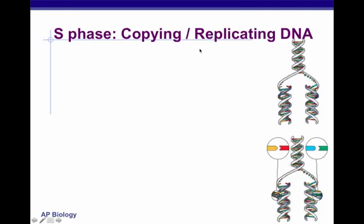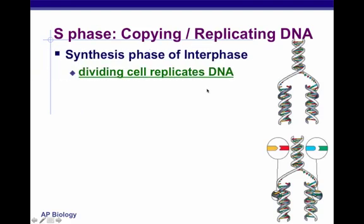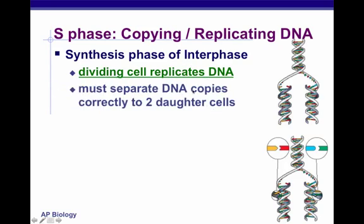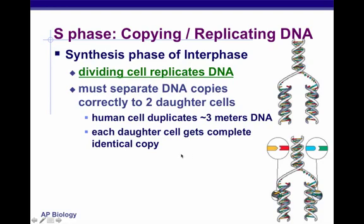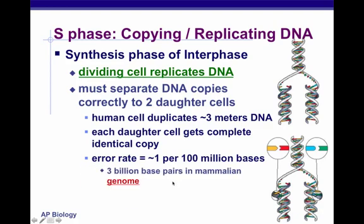Looking at the S phase again: copying and replicating DNA is the synthesis phase of interphase. We're preparing DNA copies for two daughter cells. The human cell duplicates about three meters of DNA. Each daughter cell gets a complete, identical copy, with an error rate of about one in every 100 million bases. With three billion base pairs in a mammalian genome, that's about 30 errors per cell cycle.